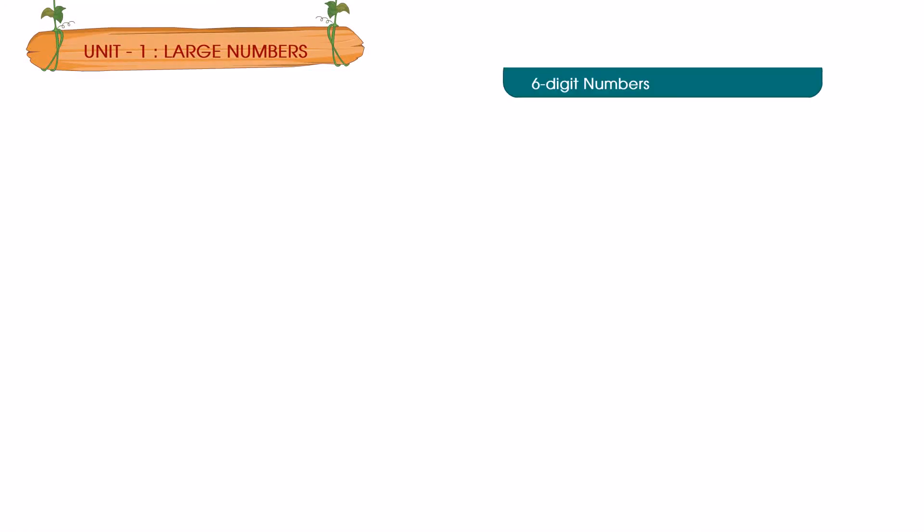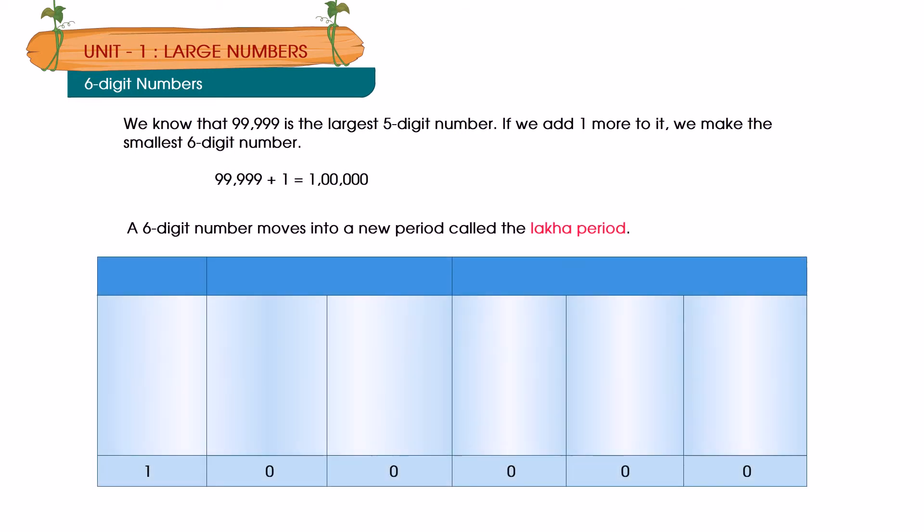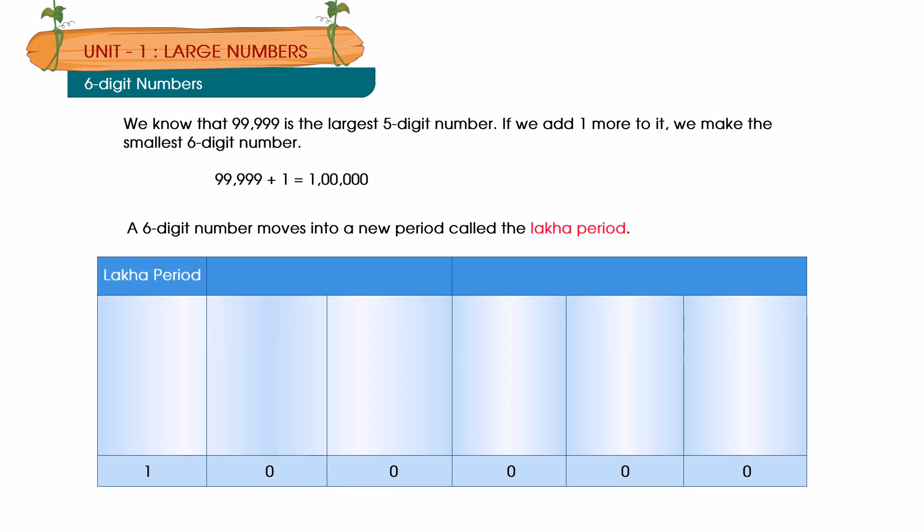6-digit numbers: We know that 99,999 is the largest 5-digit number. If we add one more, we make the smallest 6-digit number: 99,999 plus 1 equals 1,00,000. A 6-digit number moves into a new period called the lakhs period. Lakhs period: Lakhs. Thousand periods: Ten-thousands, Thousands. Ones period: Hundreds, Tens, Ones.